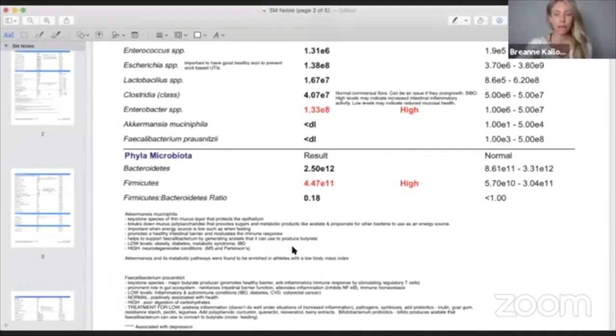Today we're going to go through how the gut and the gut microbiome can impact your ability to lose weight. Here we have a patient's GI map test that we just got back. The key things I want to zone in on today are Akkermansia muciniphila and Faecalibacterium prausnitzii.